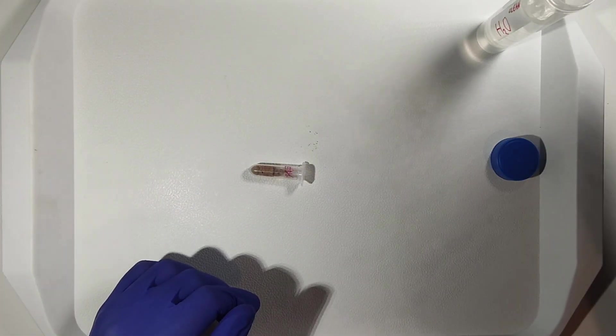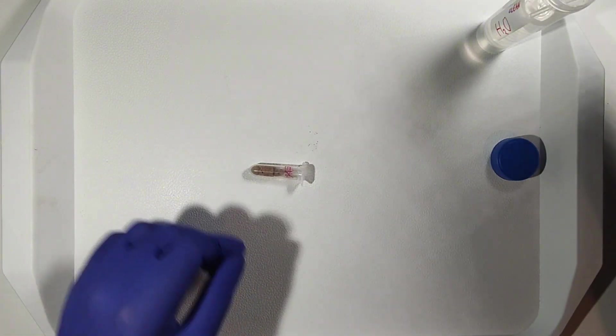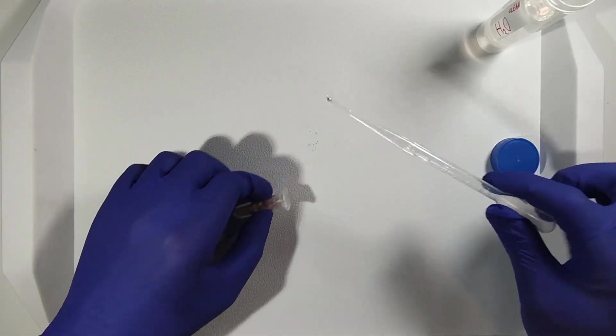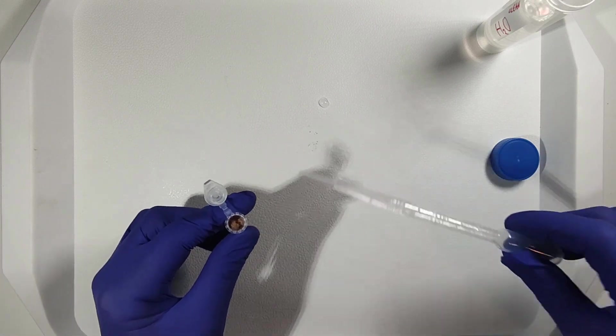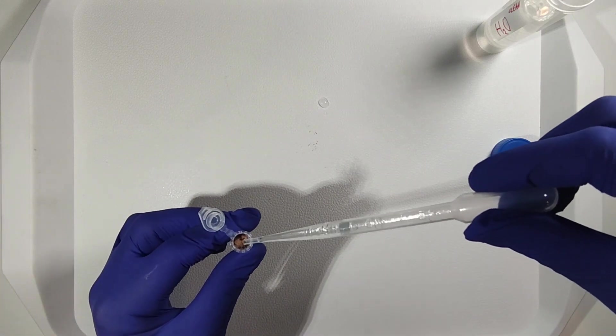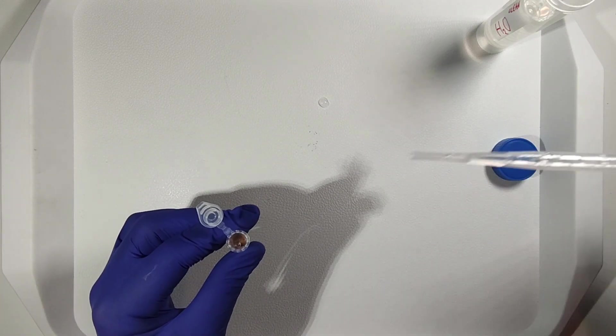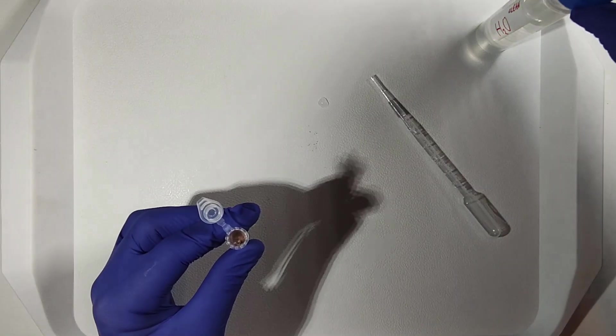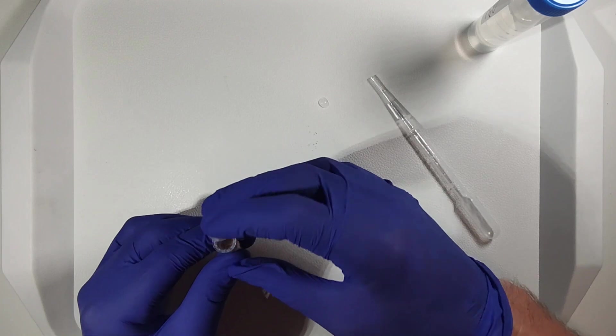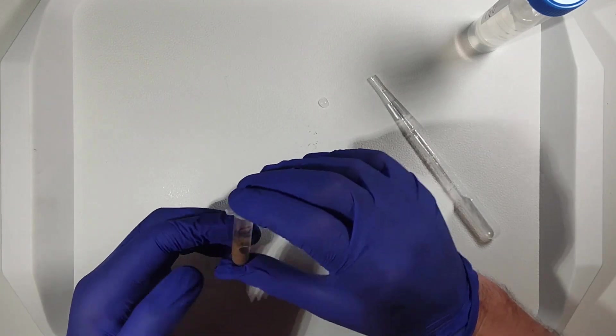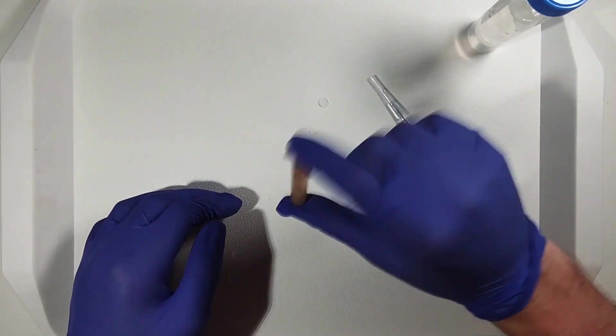Next, we will take one ml of sterile water and add it to the sand sample. The procedure for the park sample is identical. After adding the water, we need to shake the sample vigorously to ensure thorough mixing.